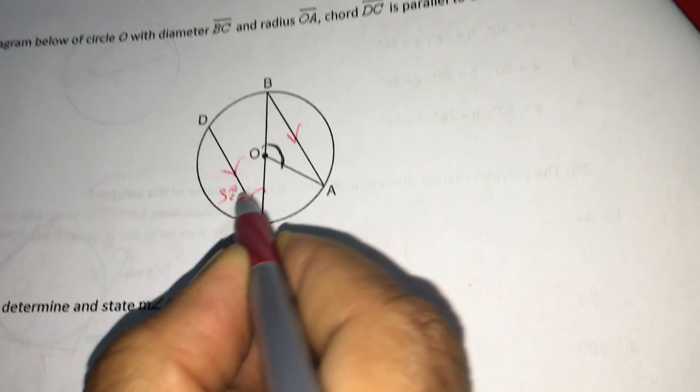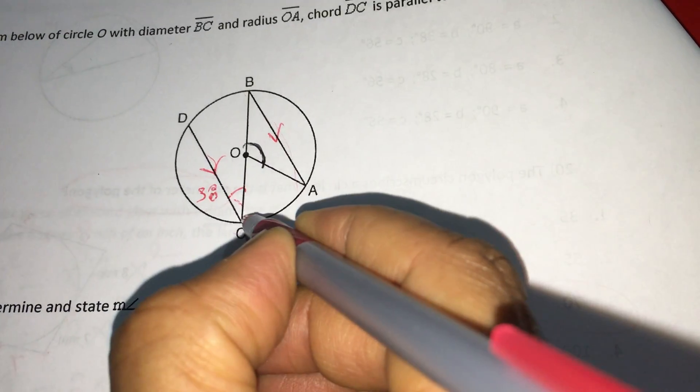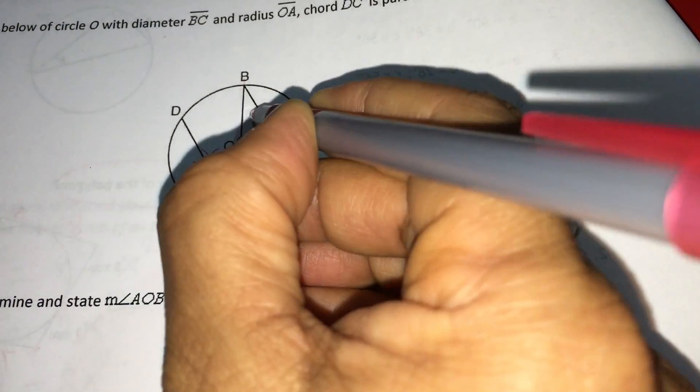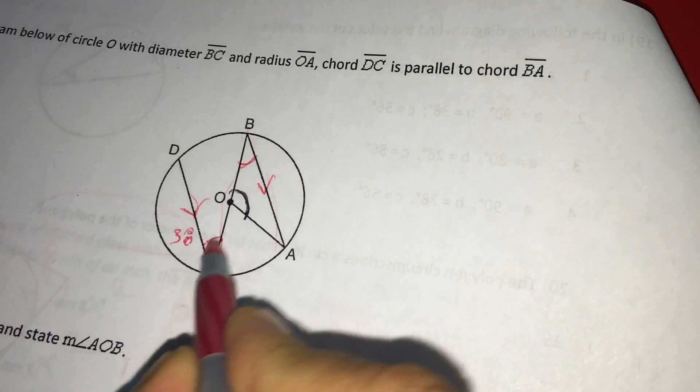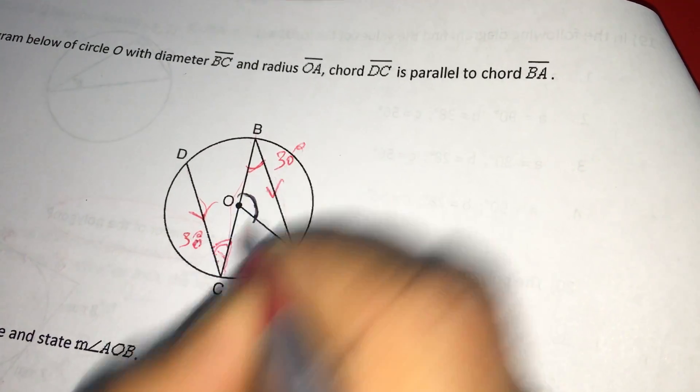Now, what you do? This angle is 30 and these two are parallel. This is a transversal. So this angle and this angle must be equal because they are alternate interior angles. So I am writing 30 degrees here.